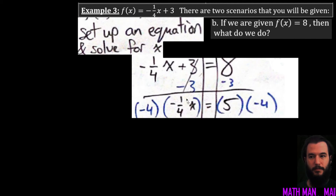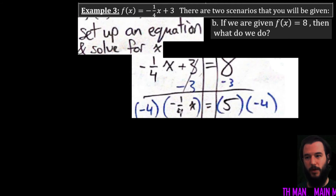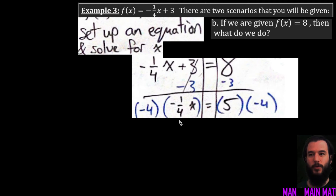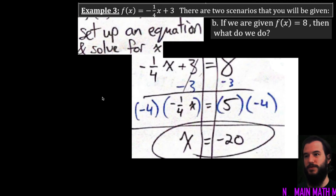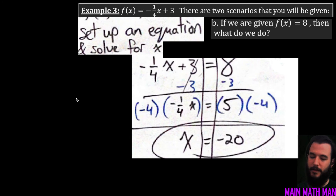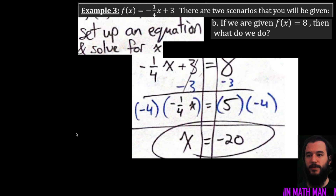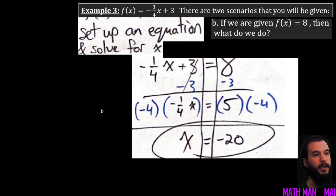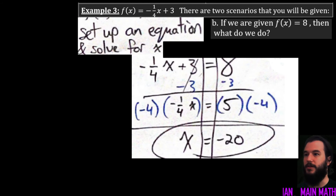This one is tricky because we have a fraction as our coefficient. We need to use the inverse operation — since the coefficient is a fraction representing division, we multiply by the reciprocal. Our goal is always to get one x equals a value. Multiplying both sides by negative 4 gives x equals negative 20. If fractions aren't your friends, you can convert to a decimal equivalent instead.